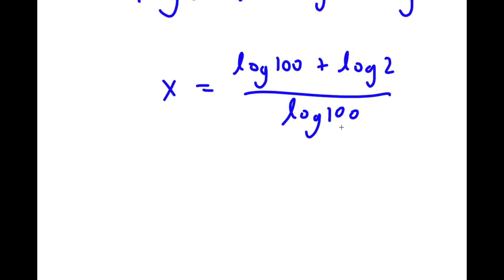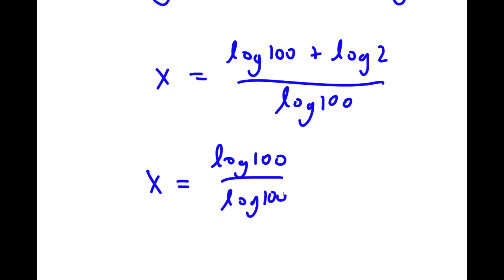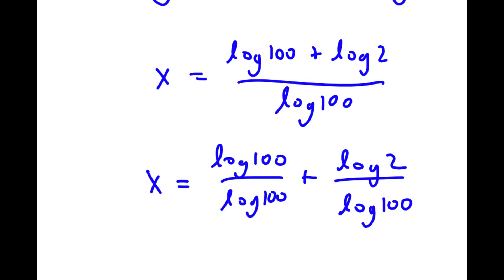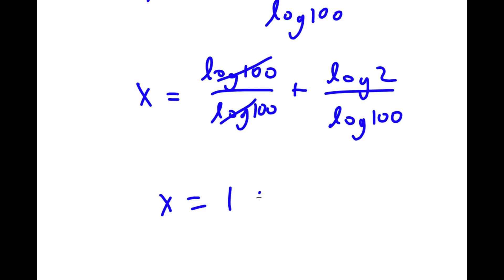Now log 100 plus log 2 over log 100 is the same thing as log 100 over log 100 plus log 2 over log 100. And log 100 over log 100, those two simply cancel out. So now I have x is equal to 1 plus log 2 over log 100.